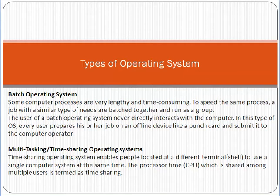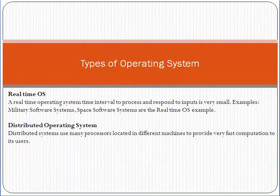Another type is the multitasking or time-sharing operating system. The time-sharing operating system enables people located at different terminals or shells to use a single computer system at the same time. The processor time — the CPU — which is shared among multiple users is termed as time sharing.